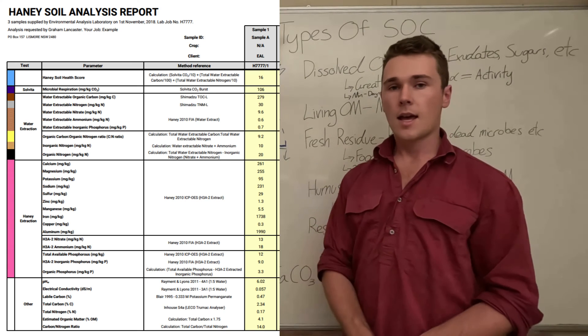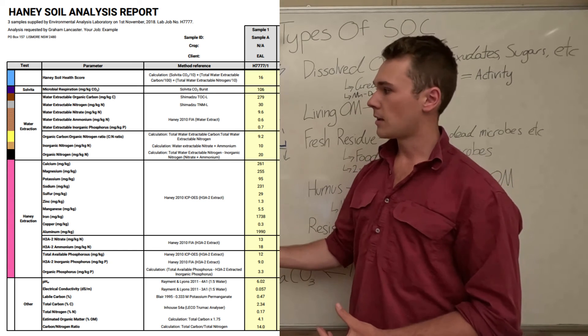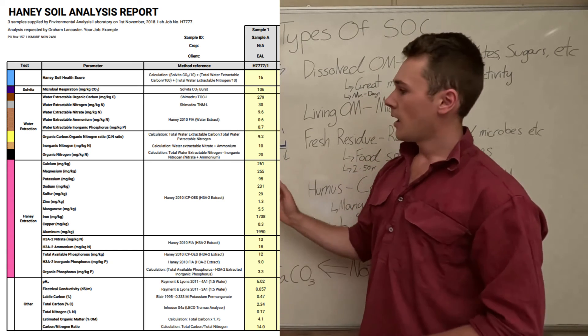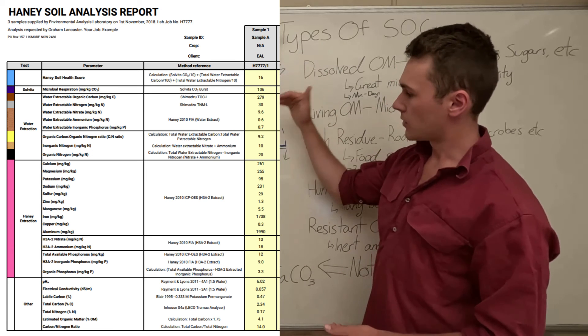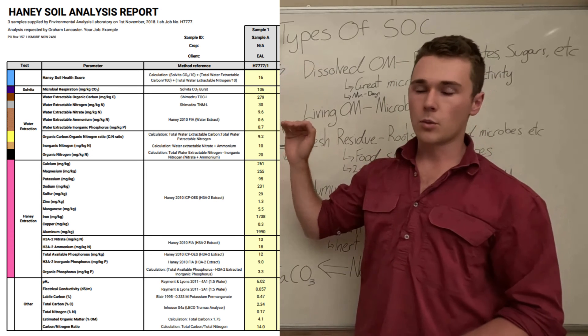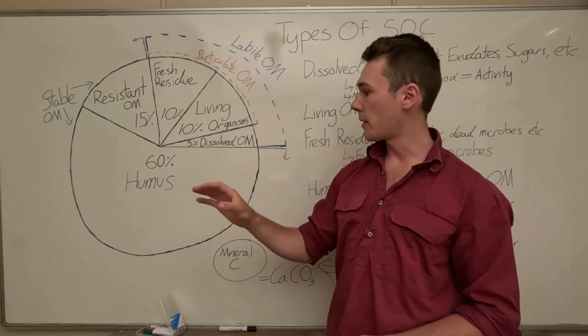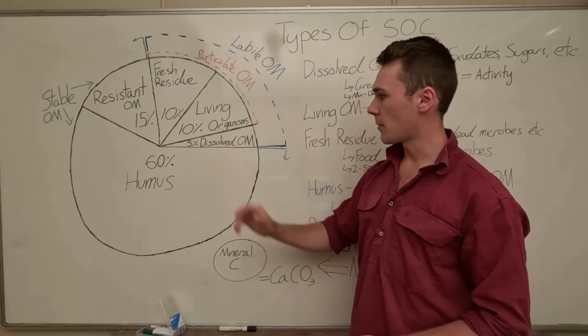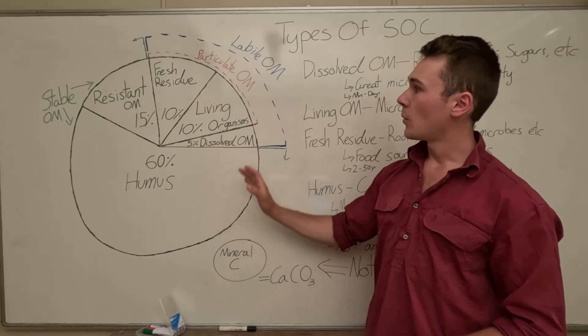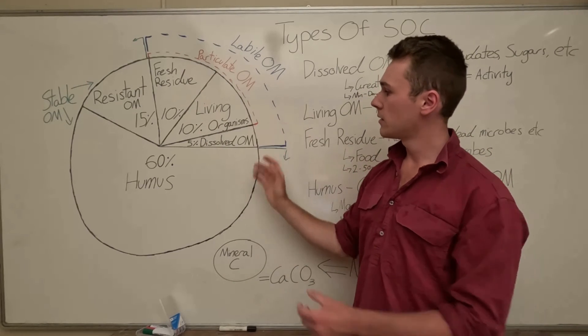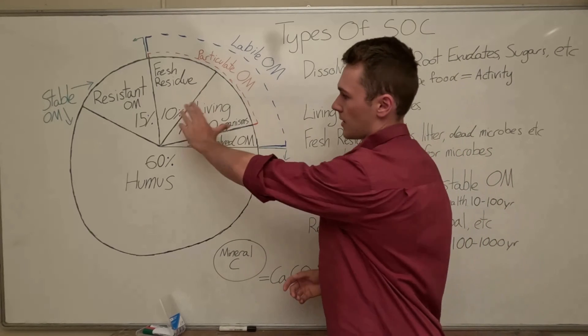Now to measure all this what we do is we use a Haney test and there should be a picture popping up here but effectively you can get our dissolved organic matter with the water extractable carbon from our water and we can determine the exact amount of dissolved organic matter. Then we get our labile carbon and we can determine the particulate proportion of our labile carbon by subtracting our dissolved organic matter.